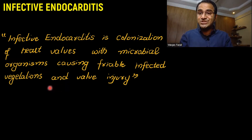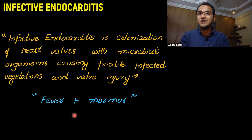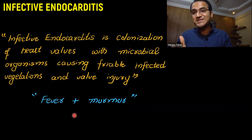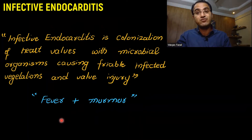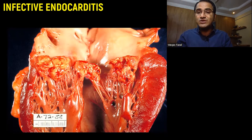The classical presentation of infective endocarditis is that the patient would be having fever, and when you auscultate the heart, you would hear a new murmur that was not present before. With fever and a new murmur, you should suspect infective endocarditis. This picture shows infective endocarditis — look at the vegetations present on the heart valve and the destruction of the heart valves.